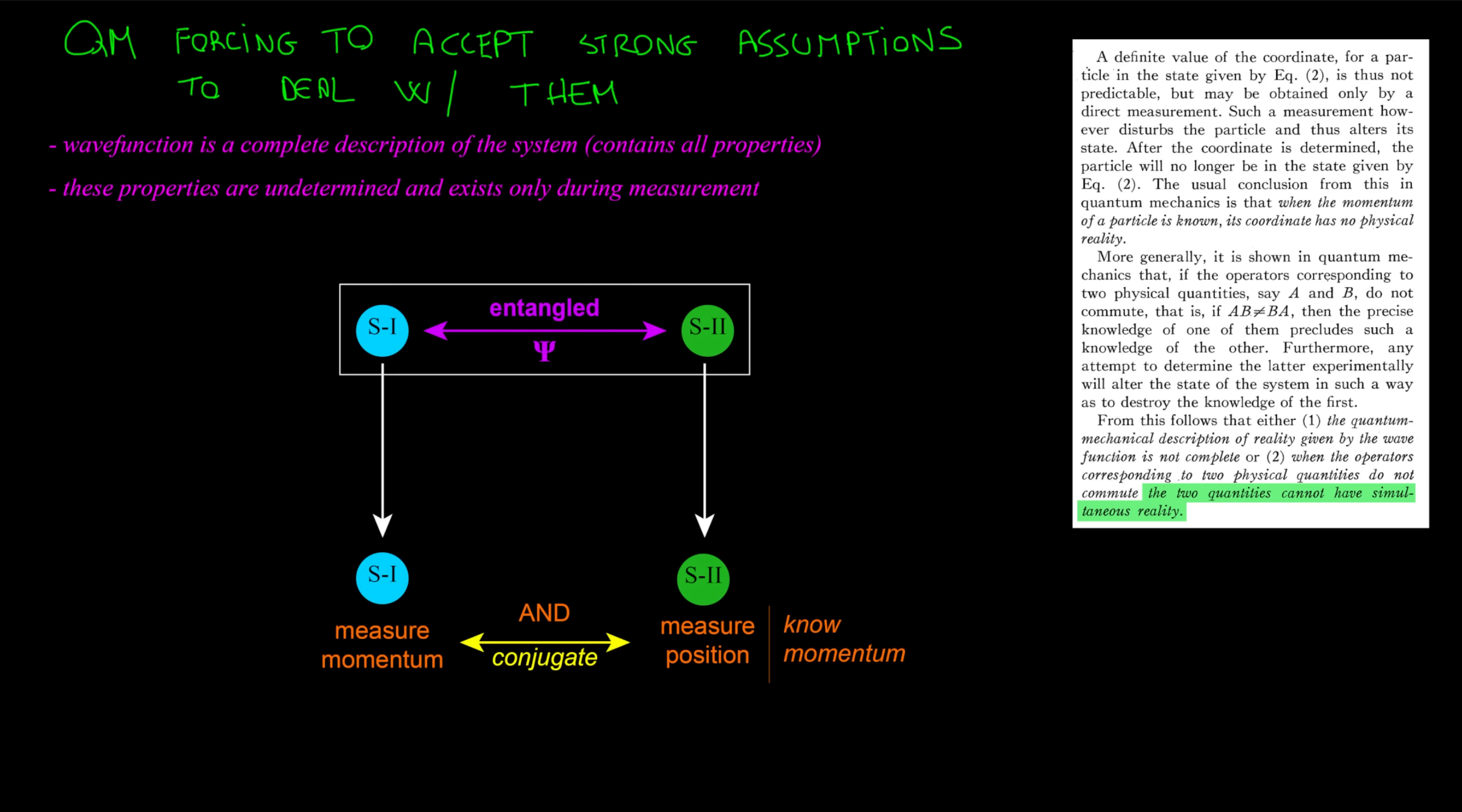Critical issues about quantum mechanics emerge immediately, since the theory is forcing us to accept some strong assumptions in order to deal with it. The wave function is a complete description of the system, so it contains all the properties, and these properties are undetermined and exist only during measurement. So I take an entangled couple and I measure momentum of the first while I measure position on the second. Despite here I can exactly know both conjugated values of the wave function, and somehow System 2 must have reached the detector, according to quantum mechanics System 2 doesn't have momentum. It is emphasized that within System 2 momentum can't exist, because if it were just unknown it would be hidden variables.